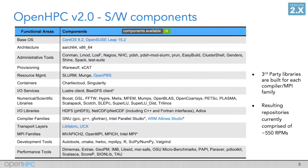OpenHPC version 2.0 came out recently, and this table highlights all of the software components that are available in that release. It comprises roughly 78 different software components. And the things that are highlighted in blue are items that are new in OpenHPC 2.0.